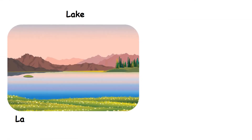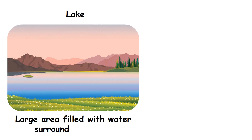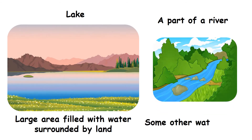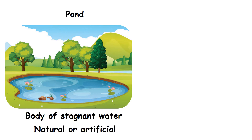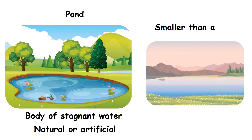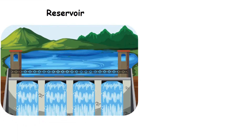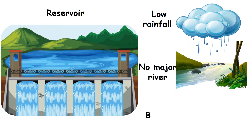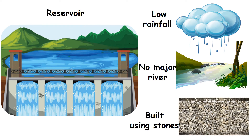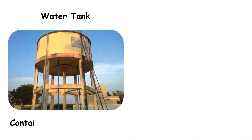Lake: It is a large area filled with water, surrounded by land. It is usually a part of a river or some other water source. Pond: A pond is a body of stagnant water, either natural or artificial, and it is smaller than a lake. Reservoir: It is built in areas of low rainfall or in areas where there is no major river. Most reservoirs are built using stones. Water tank: It is a container for storing water for daily use.